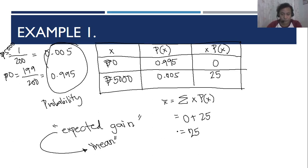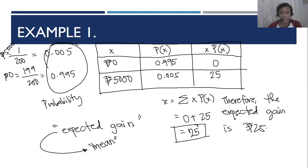Therefore, the mean equals 0 plus 25, which equals 25. Therefore, the expected gain is 25 pesos. So ganyan lang yan. Again, in solving the expected gain, expected value, or the mean, you just need to multiply the probability with the x value. After that, you will just get the sum, lahat nung nasa xP(x) ninyo, and then the sum will be your expected value.